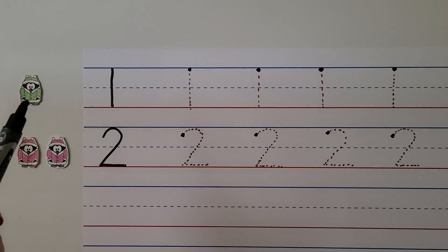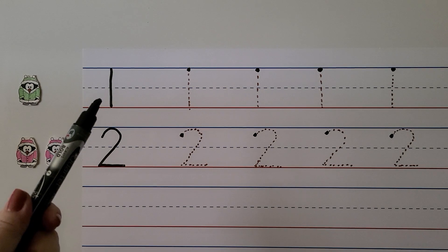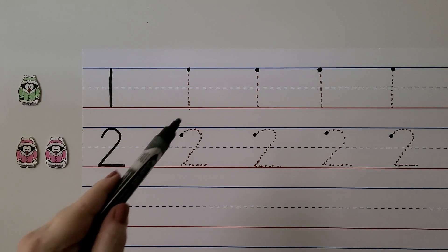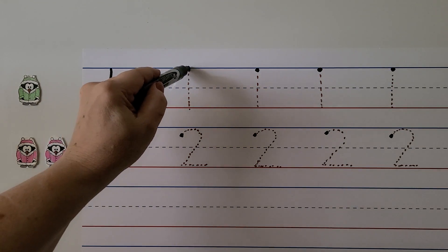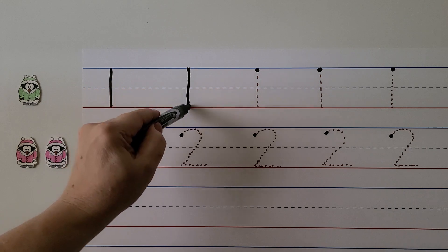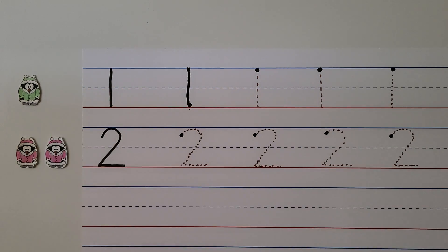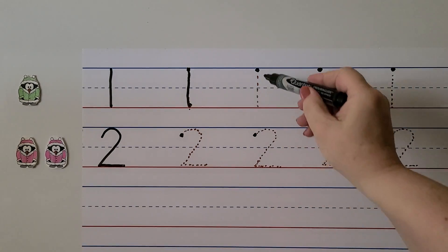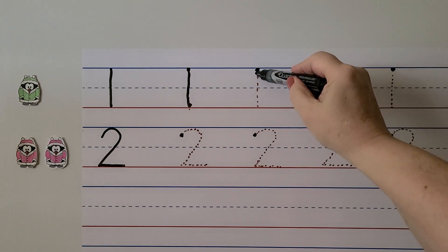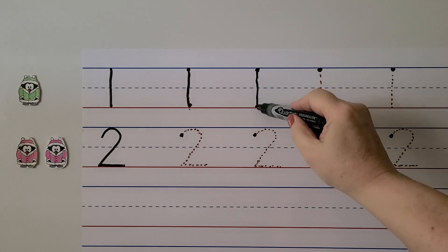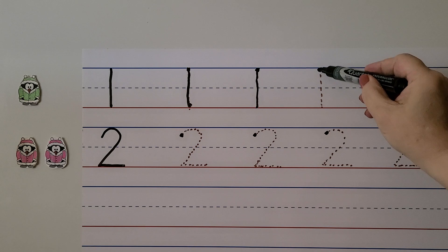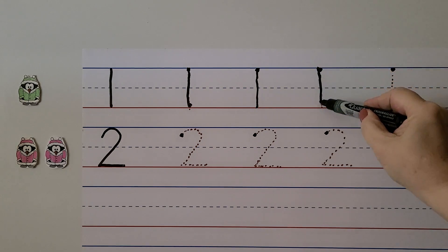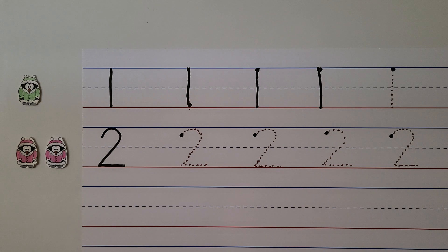Here we have one penguin. That's the number 1. We can write the number 1 starting up here at this black dot at the top of the line. We go straight down to the bottom line — 1. For right-handed students, we start at the top dot and go straight down to the bottom line. We make a 1.